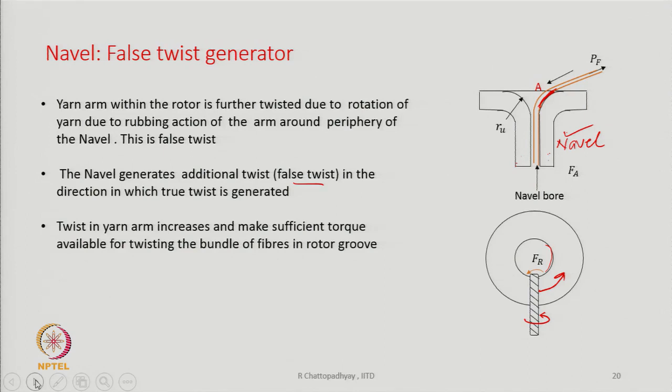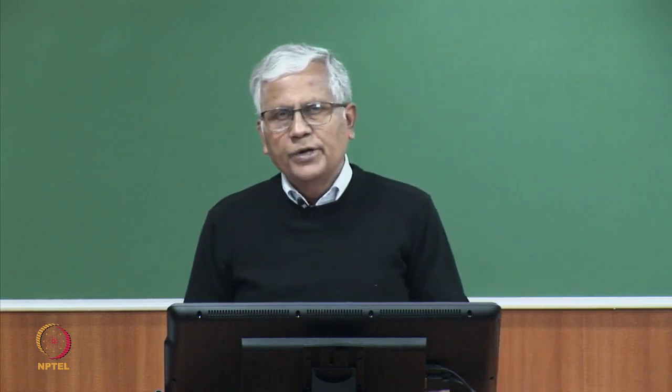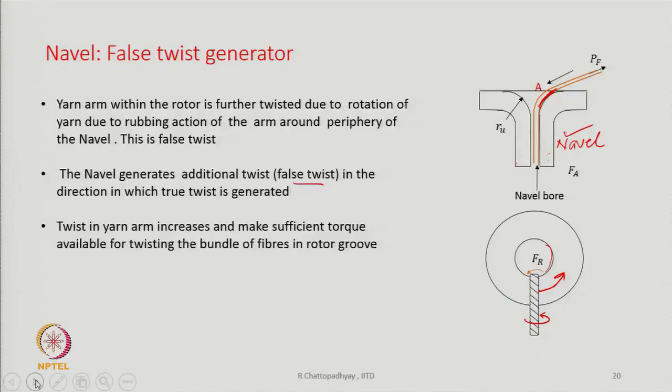By generating additional twist temporarily, we gain in terms of yarn strength when it lies within the rotor. But as soon as the yarn leaves the rotor, the false twist will vanish, and only the twist we decided upon will remain. Too much twist in a yarn makes it very hard and negatively affects its feel. If we can temporarily increase twist within the rotor and avoid breakage of the yarn end, we gain. Since it is temporary, it will not affect final yarn quality.